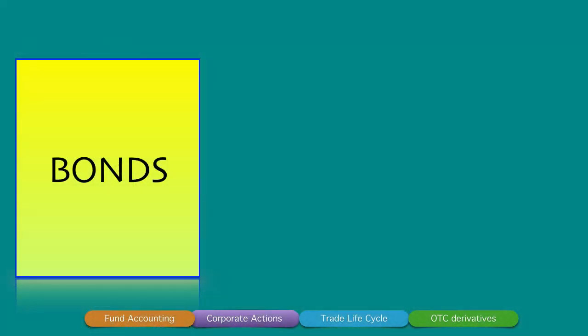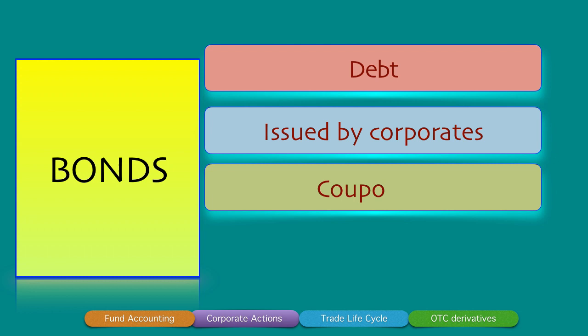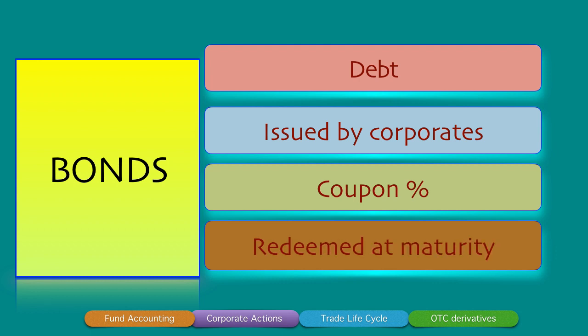As we know, bonds are debt instruments that are issued by corporates to invest in different kinds of capital projects. These bonds have a percentage coupon that they pay, which is a percentage of the par value, and they are redeemed at maturity after the passage of a certain period of time. So bonds are debt instruments which pay a fixed obligation called a coupon, and they're redeemed at maturity.